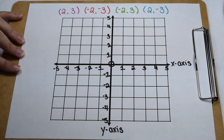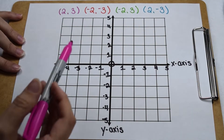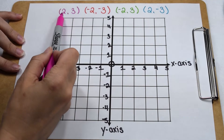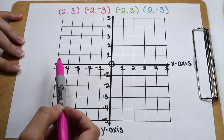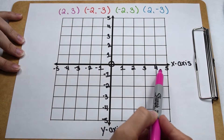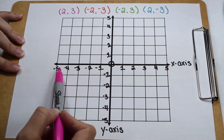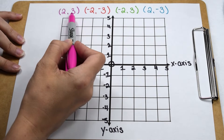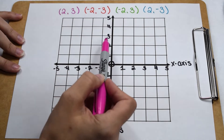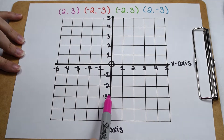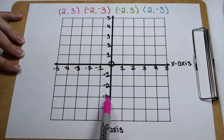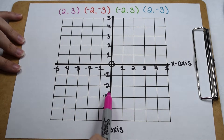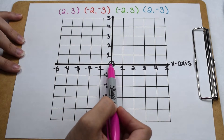An ordered pair is a set of two numbers. Our first value is the x-coordinate and is plotted on our horizontal x-axis. Our second value is the y-coordinate and is plotted on our vertical y-axis. Today we're going to be plotting points using both positive and negative values. All points are going to start from the origin.